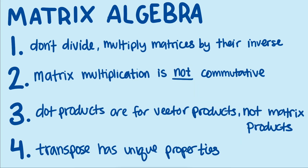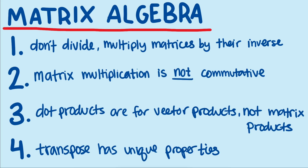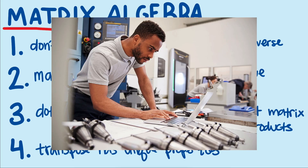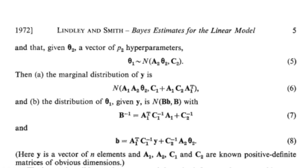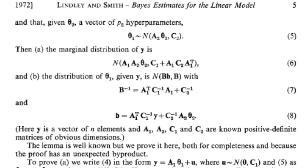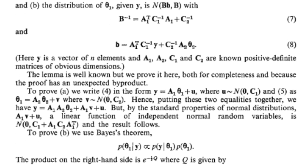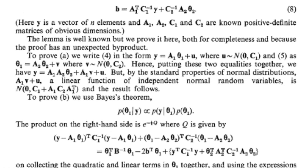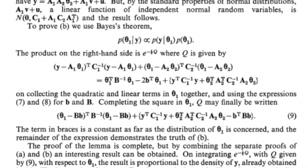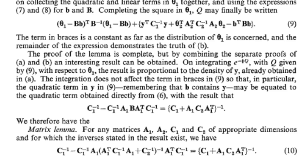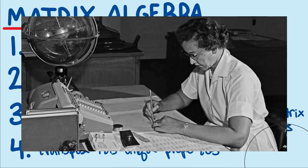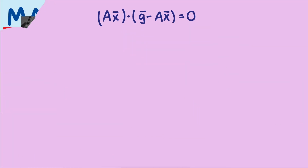Matrix algebra is a key part of linear algebra and a very powerful tool for scientists, economists, engineers, statisticians, mathematicians, and others. For example, you can see the central role it has in papers like this one from Lindley and Smith, which helps us understand how to do regression when certain assumptions for ordinary least squares regression are violated. Now let's start applying these rules to solve for X bar in our equation.